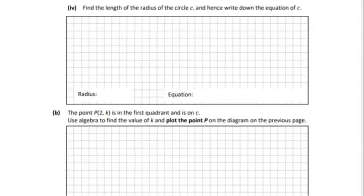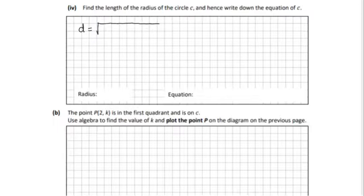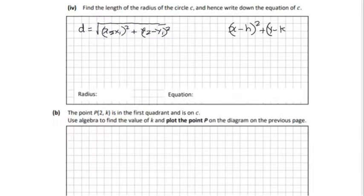Let's go on to Part 4. We need to find the length of the radius and the circle equation for circle C. We need two formulas: the distance formula, d = √((x₂−x₁)² + (y₂−y₁)²), and the circle formula, (x−h)² + (y−k)² = r². To find r, we use the distance from C to point A.